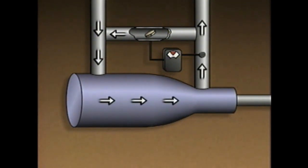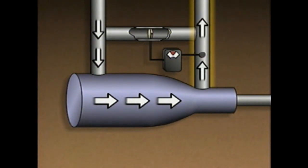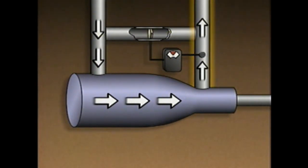When demand increases, gas flow through the compressor also increases. When the gas flow is high enough to prevent surge, the flow controller closes the recirculation valve. The gas flow from the compressor is then directed only through the discharge piping.